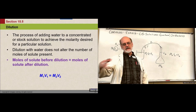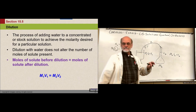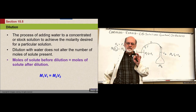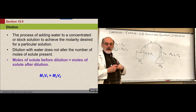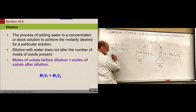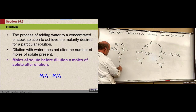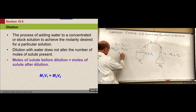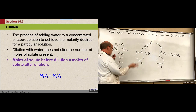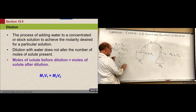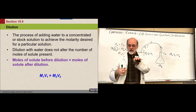Sometimes we express that as M₁V₁ = M₂V₂, or Mc × Vc = Md × Vd. The important thing is to get the numbers in the right place. When I read a word problem that's a dilution problem, I set up a chart — concentrated molarity, concentrated volume, dilute molarity, dilute volume — and put the numbers in the correct positions in the formula.